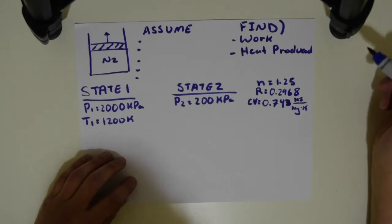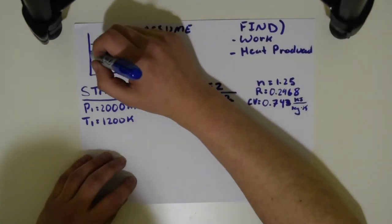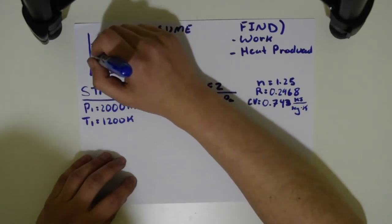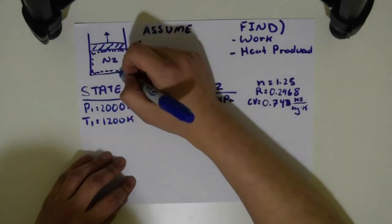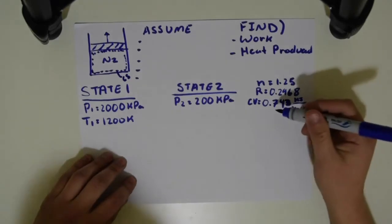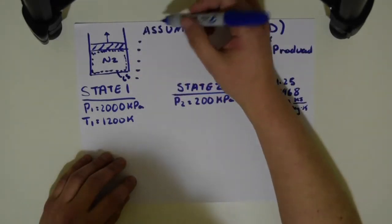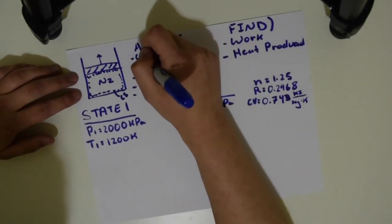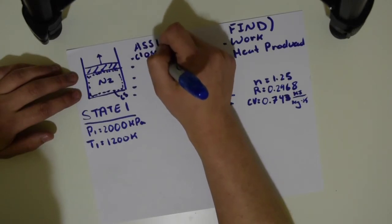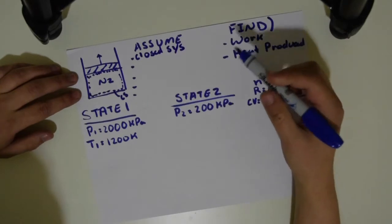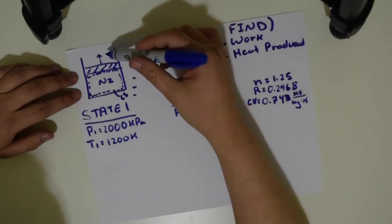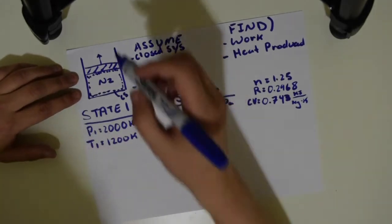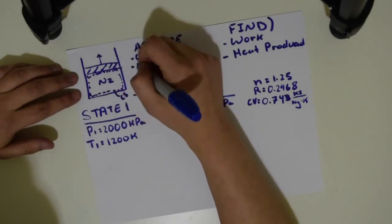To start off this problem, as always, we see that this piston is closed, so I'll draw a dotted line and say I'm going to be looking at the energy interactions within this dotted line — this is a closed system. Now we have to assume some things. We know this is a closed system, this is a polytropic process, and we have N2 going through there, so we can assume it's basically an ideal gas.